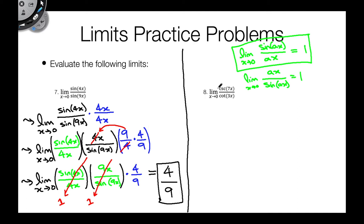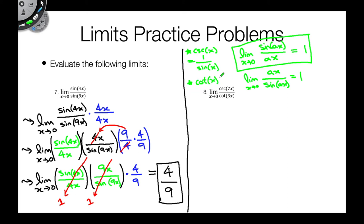Now let's try this next problem. Right off the bat, this looks a little more confusing because there are no sines in it — our identity only works with sine of x, and there's no sine of x here. However, if we remember our trig definitions: cosecant of x equals 1 over sine of x, and cotangent of x equals cosine of x over sine of x. And there are the sine of x terms I can use to solve this question.